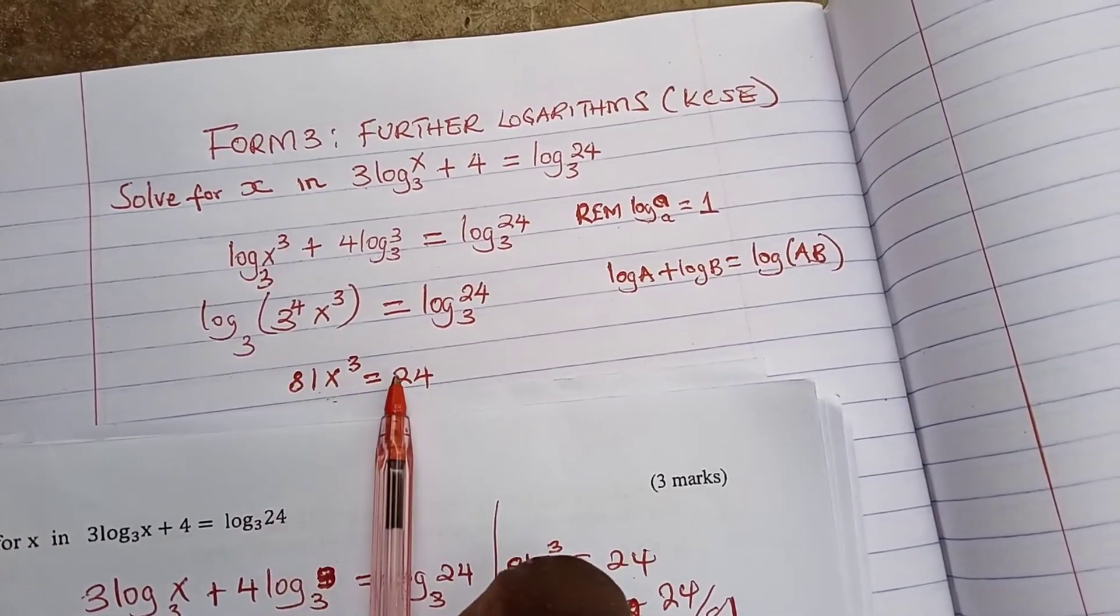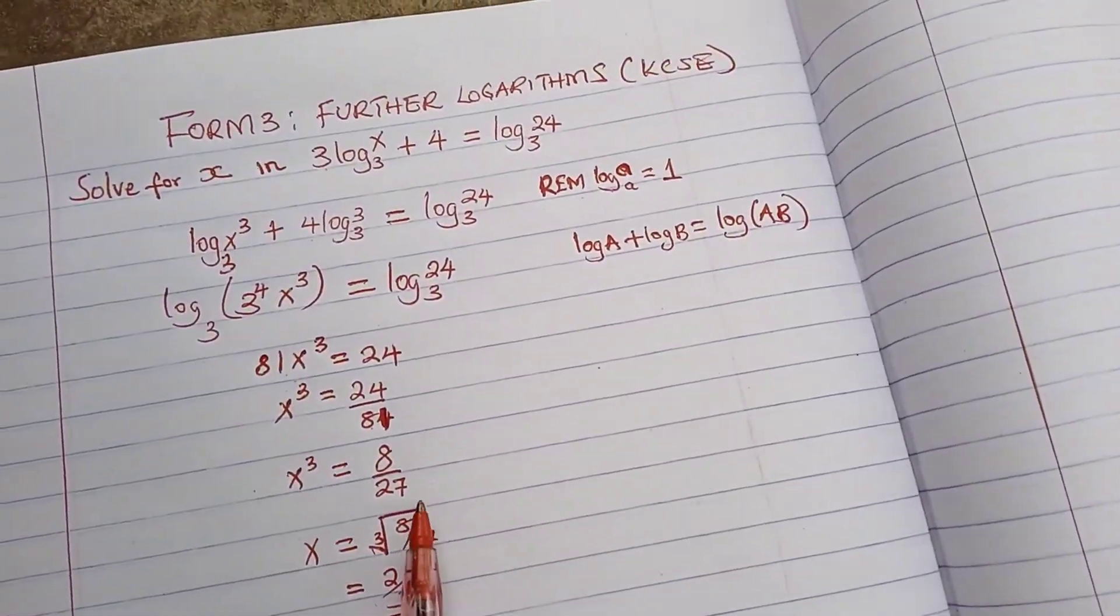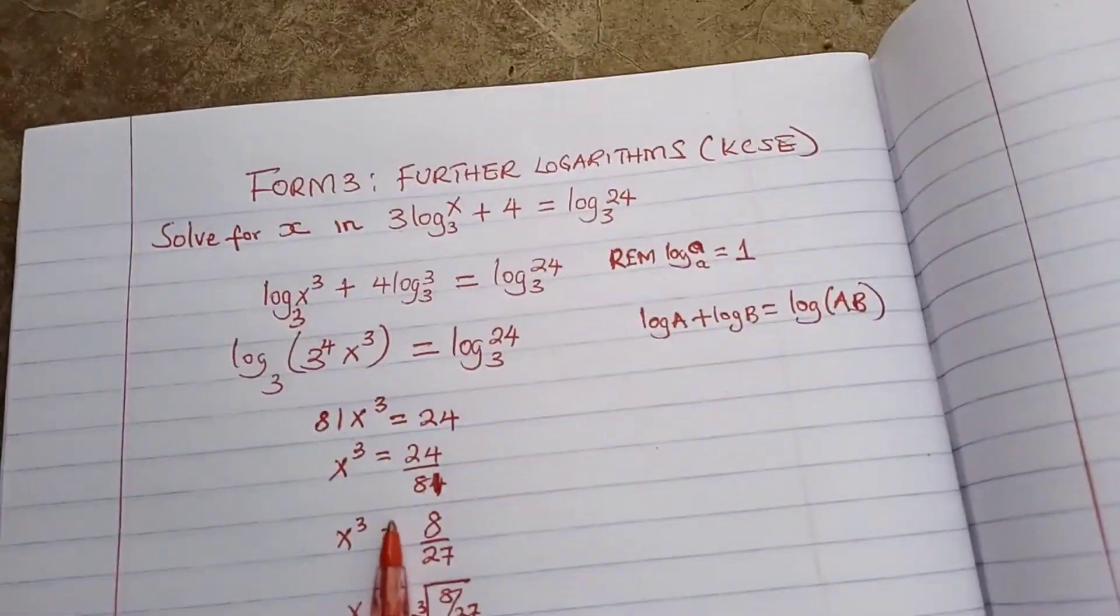Now we divide both sides by 81, we are going to get x cube to be 24 over 81.